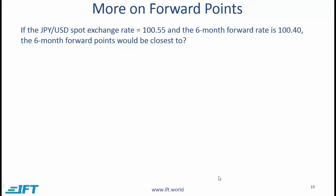In the example I just showed you we converted points to decimal by dividing by 10,000. For some exchange rates such as Japanese yen to USD, the convention is to use two decimal places. When we have a two-decimal-place convention, then converting points to decimal requires a division by 100.